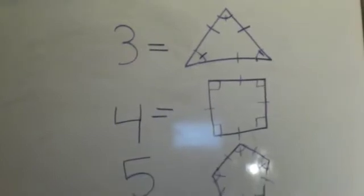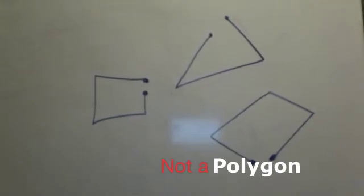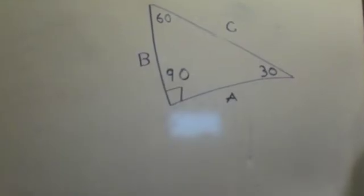Shapes that aren't closed are not polygons, and if it has different sides and angles, it's a polygon, it's just not regular.